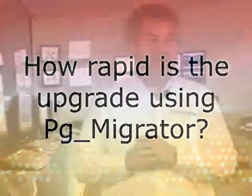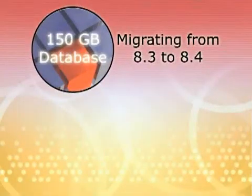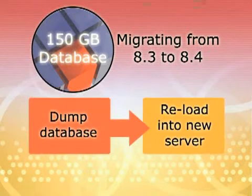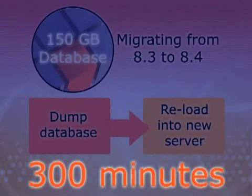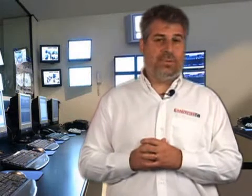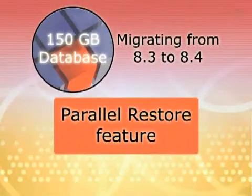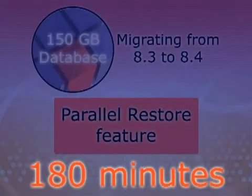How rapid, you might wonder? Well, one of our early testers had a 150-gig database, and he tried the traditional method of migrating from 8.3 to 8.4 by dumping his database and then reloading it into the new server. Unfortunately, that took about 300 minutes, which is about five hours. Then they tried using the new parallel restore feature that came in Postgres 8.4, which reduced the dump and reload time to about 180 minutes — still three hours.